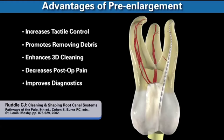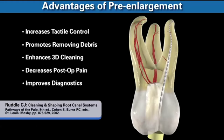Pre-enlarging a canal gives much more apical one-third control with hand files. Irrigant in a pre-enlarged canal is present in sufficient volume to penetrate, circulate, and begin flowing into the uninstrumented portions of the root canal space. Research has shown that a pre-enlarged canal decreases post-operative pain because there's less likelihood of pushing debris periapically. When we have a pre-enlarged canal, its apical one-third can usually accept a larger instrument, improving radiographic control and enhancing the accuracy and reliability of all apex locators.